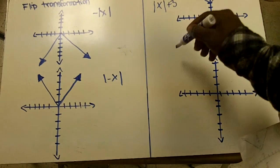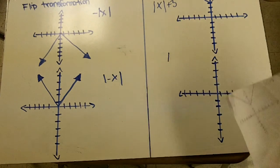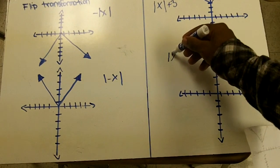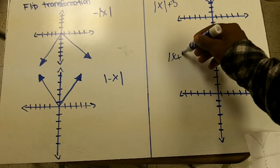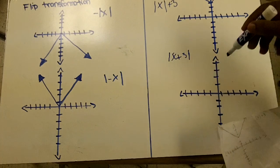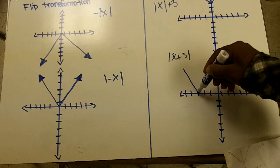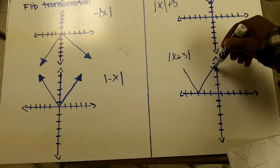And then changing the number on the inside moves it side to side, like so. So it's on the three over here if you put it in the calculator.